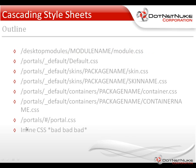Within .NET Nuke, there are a number of different style sheets that come with the platform, and they get loaded in a very specific order. You can see the standard listing here on the screen. Any modules that you have on a .NET Nuke page that have their own module .CSS file will be loaded first. After that, you're going to have a file called default.css that's loaded on every .NET Nuke page of every .NET Nuke website in existence.